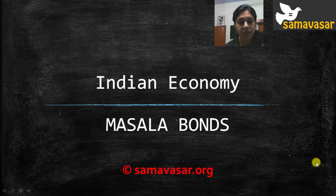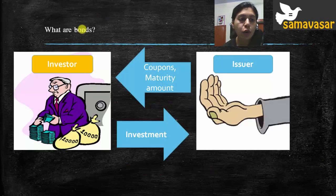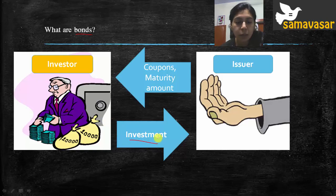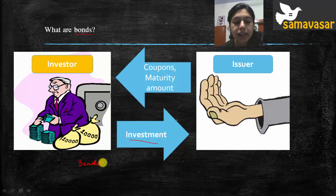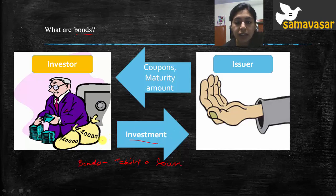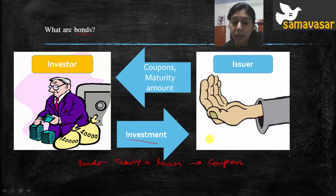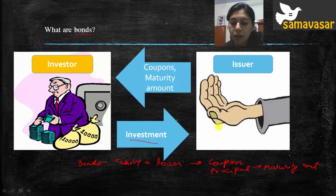In this video we'll be learning about Masala Bonds. Before we go on to Masala Bonds, let's understand what bonds are. There is an issuer of a bond and there is an investor. The issuer issues a bond, and the investor buys it. Once the investor has bought the bond, the issuer gives the investor coupons and the maturity amount. Simply put, the issuer is taking a loan from the investor, who gets interest payments as coupons, and eventually receives back the principal, called the maturity amount.